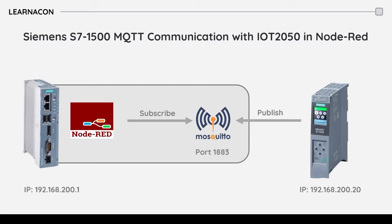Hello, this is Sharan from Learnacom and in this video I'm going to walk you through implementing MQTT communication with Siemens IoT 2050 and S7-1500 PLC. In this example, PLC plays the role of publisher, Mosquitto is the broker and Node-RED is the subscriber. Keep in mind that the broker and subscriber are two applications installed on IoT 2050. If you don't know how MQTT communication with Node-RED works, I recommend watching my previous video where I explained how to implement MQTT communication in Node-RED.